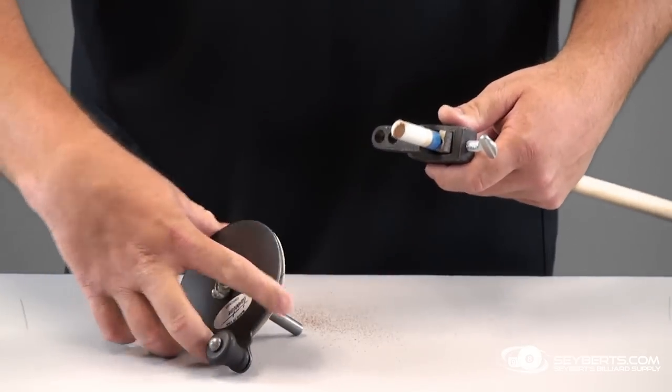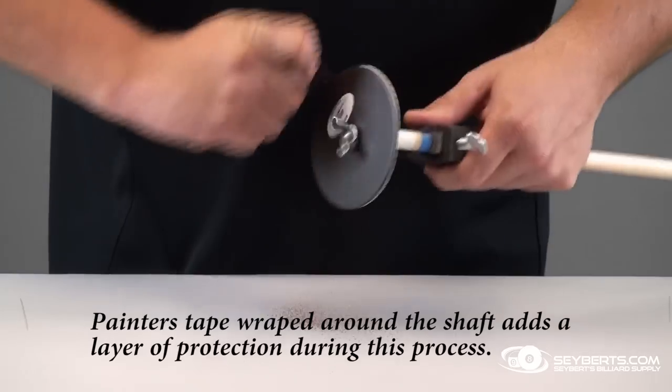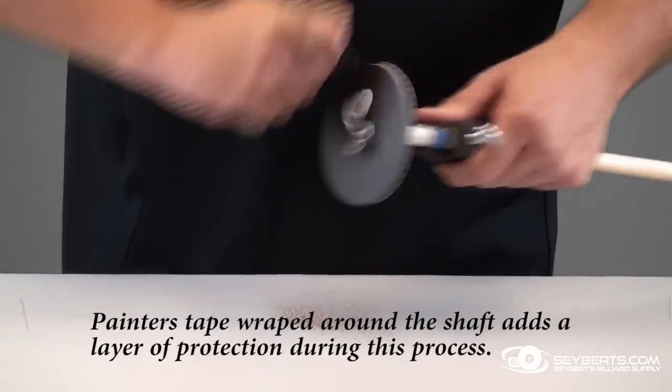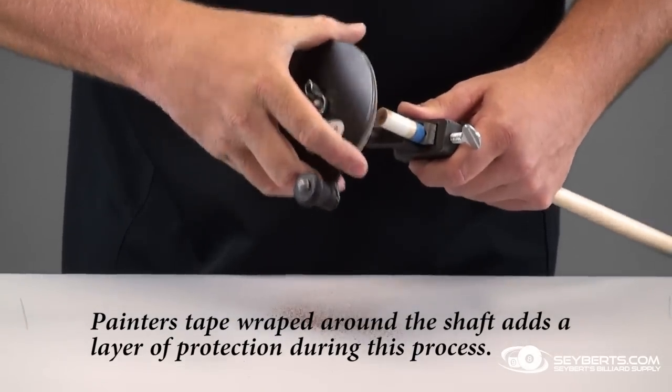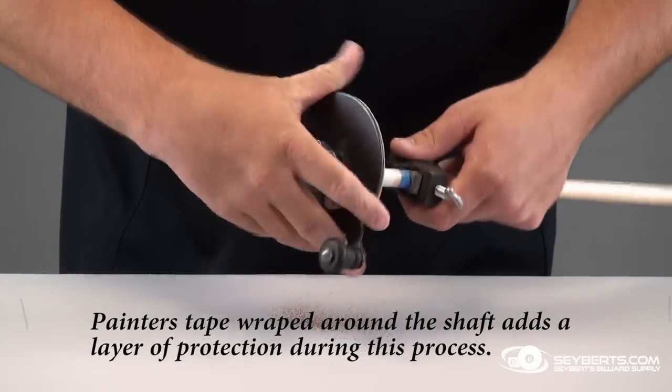Then you want to grab your cue top sander, attach it to your ferrule, and screw it down snug. It doesn't have to be real tight, just want to hold it in place. Throw that on, turn it around - it flattens the ferrule to a nice 90-degree angle and gives a good base.